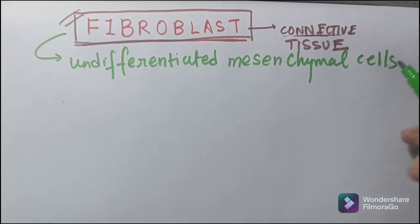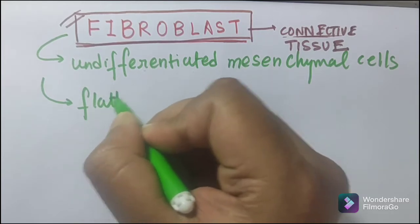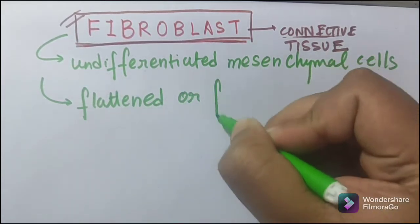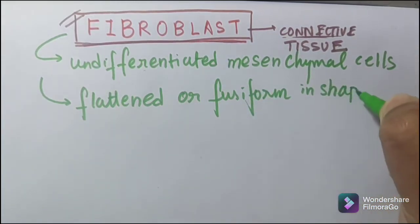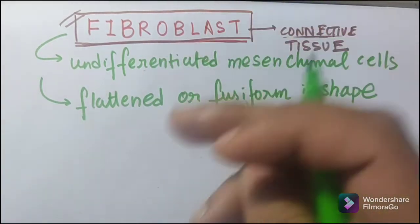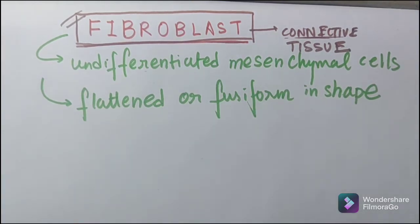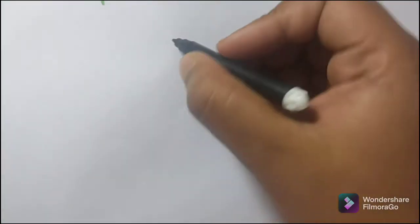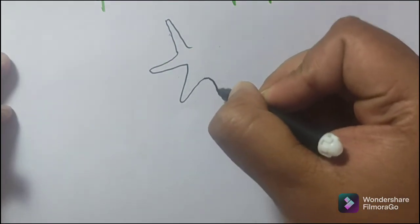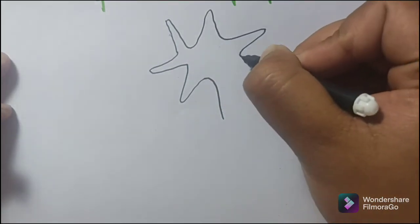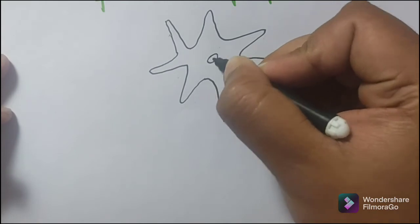Each cell is flattened or fusiform in shape. Fibroblast has a centrally placed nucleus. Let me draw a fibroblast so that you can appreciate how it actually looks like.